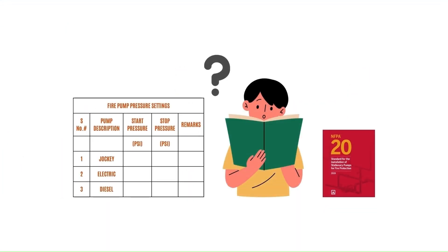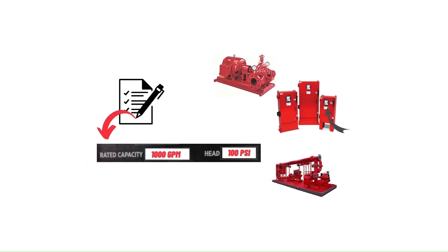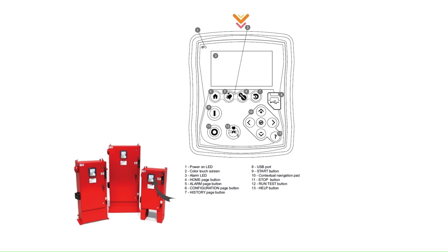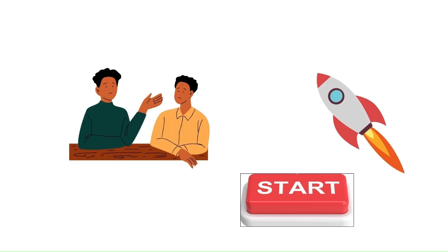Before we attempt to determine the pressure settings for NFB820, we need to fetch the data related to the selected fire pump. The manufacturer will not provide factory preset settings; however, these settings can be adjusted from the pump controller at the project site, so we could potentially increase or decrease the range based on our requirement. Let's go ahead and start determining the stop and start pressures of the fire pump.